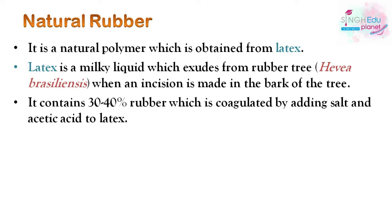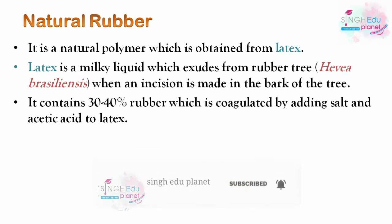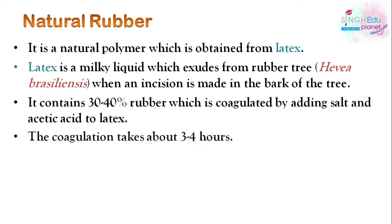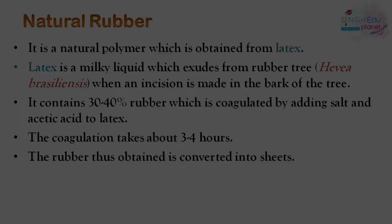Coagulation of latex is done by adding salt and acetic acid. Latex contains 30 to 40 percent rubber, coagulation takes about 3 to 4 hours, and the rubber obtained is then converted into sheets.